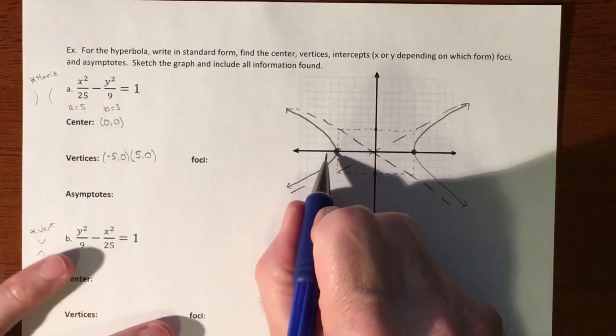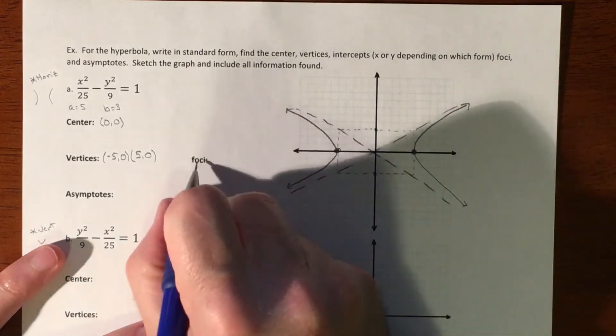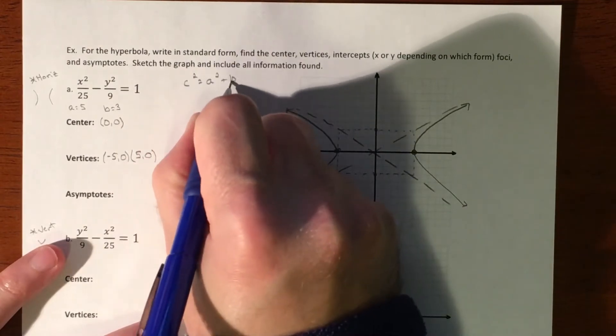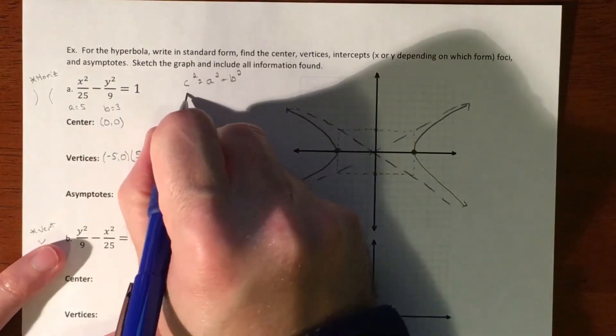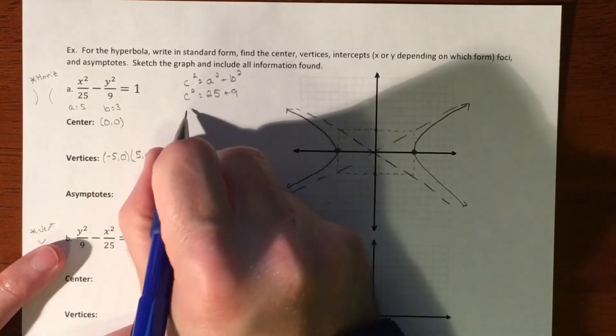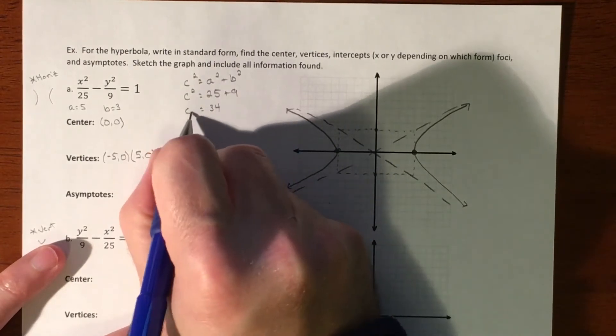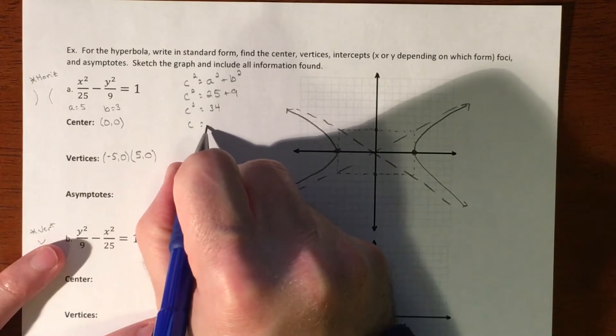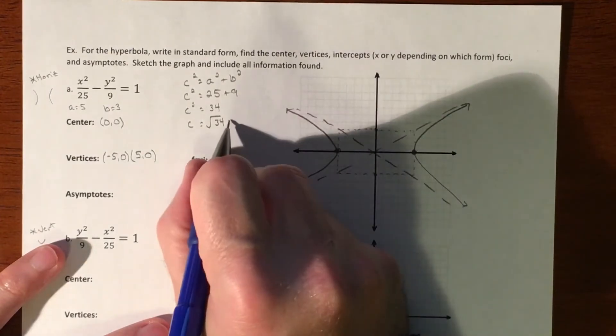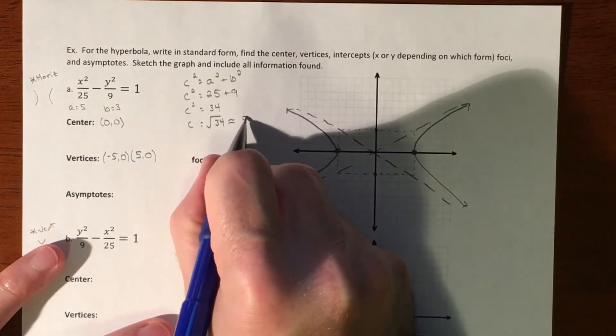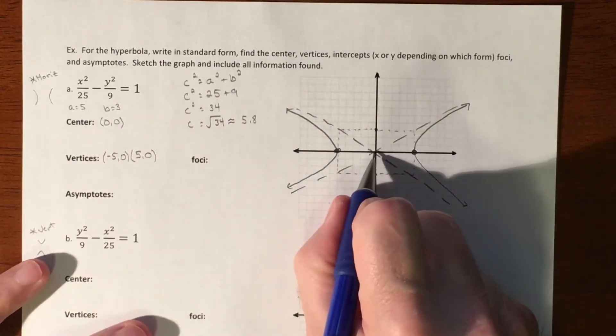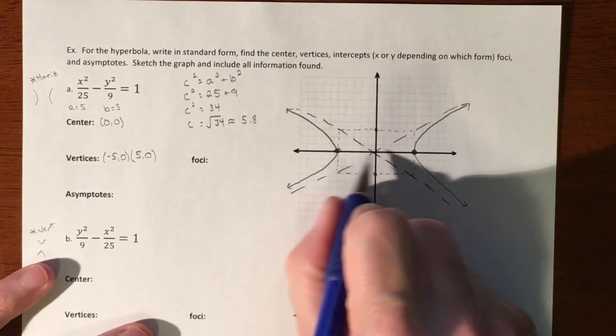To figure out our focal points, they're going to be out here somewhere. And so that's going to come from, our c squared is going to be our a squared plus b squared. So we're going to sum up the denominators. So our c squared is going to be 25 plus 9, which is 34. So our c is going to be the square root of 34.